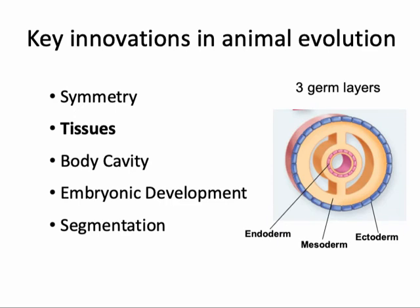Another key innovation of animal groups was the appearance of tissues — groups of cells working together for a specific function. Tissues evolved in part because of the appearance of different germ layers: three main layers into which cells organize themselves during development. These three layers are the ectoderm, the outermost layer, which gives rise to the skin and nervous system; the mesoderm, which gives rise to blood, muscles, and bones; and the endoderm, which gives rise to the inner lining of the digestive tract. Not all animals have three germ layers. Sponges don't have any germ layers at all. Cnidarians like jellyfish and corals have two germ layers, but all animals after that have three germ layers.